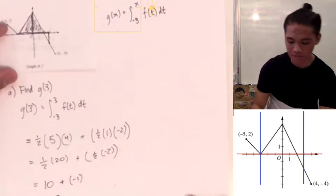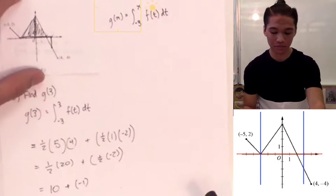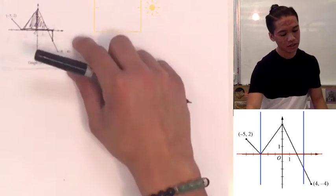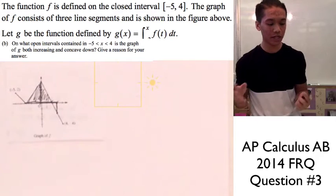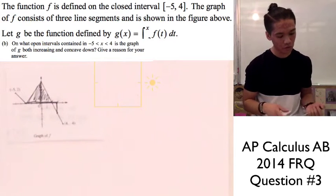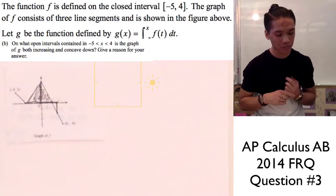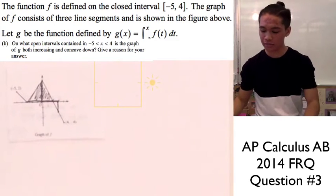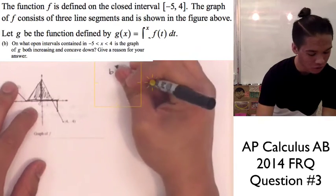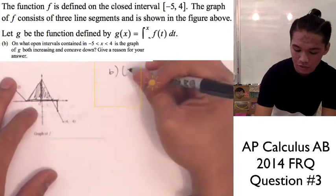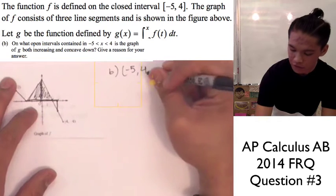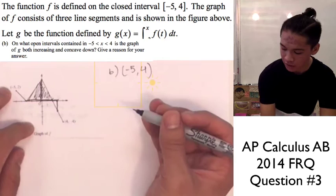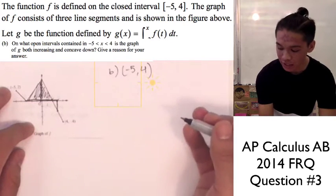So our g of 3 equals 9, and that's how you answer part A. Now we can move on to part B. Part B is asking: on what open intervals contained when x is between negative 5 and 4, is the graph of g both increasing and concave down? Give a reason for your answer. Our interval is from negative 5 to 4, and we have to look for whenever g is both increasing and concave down.